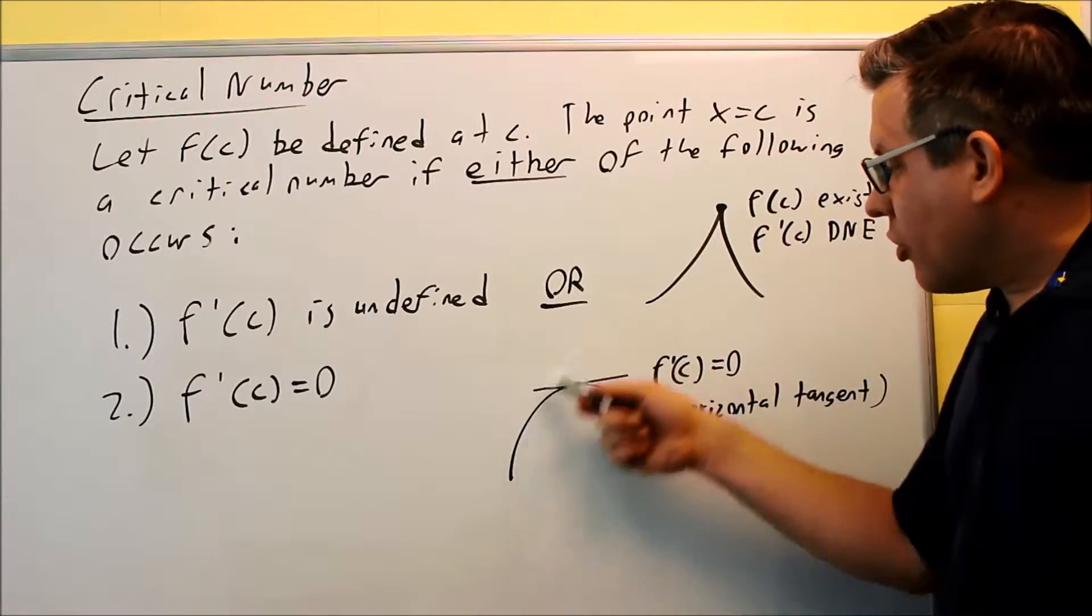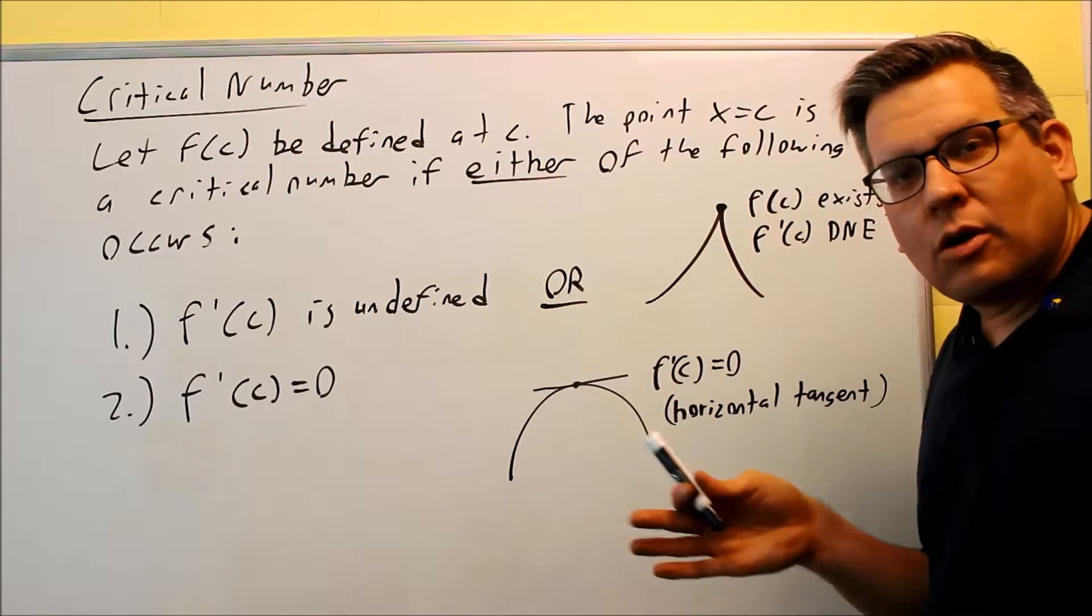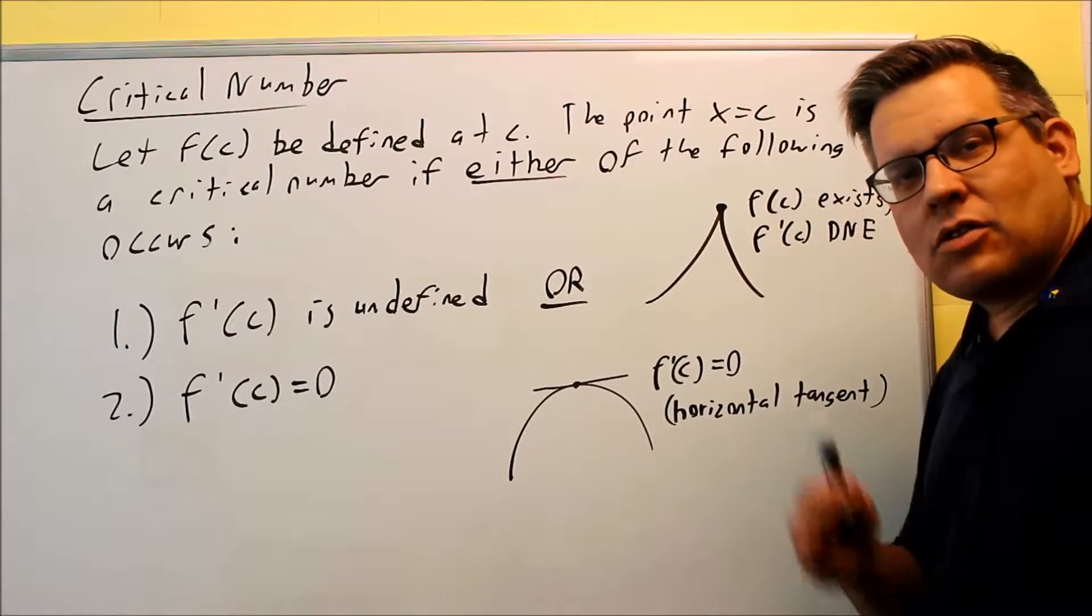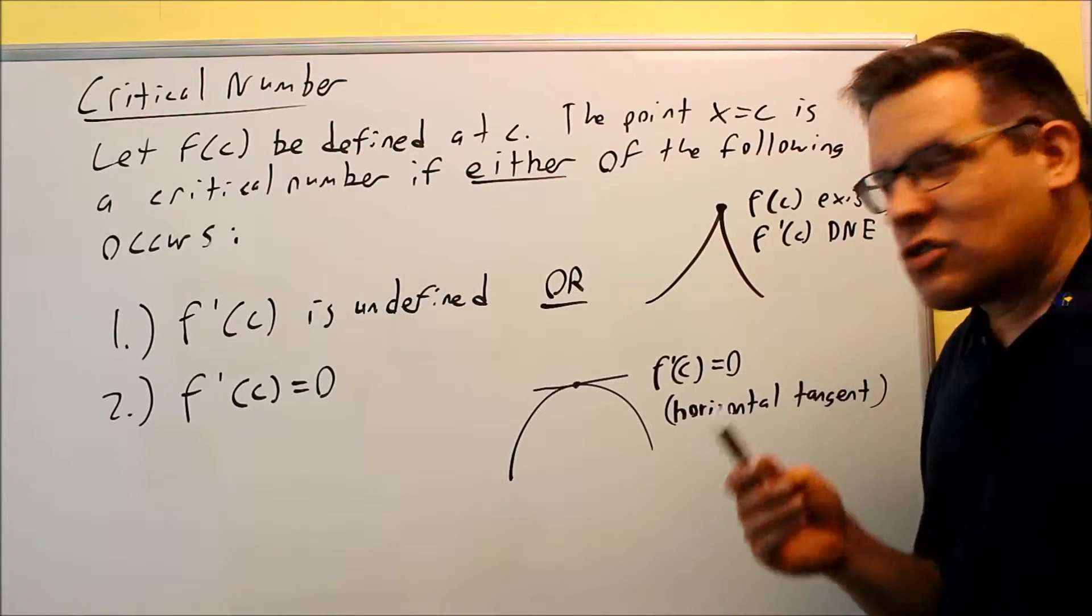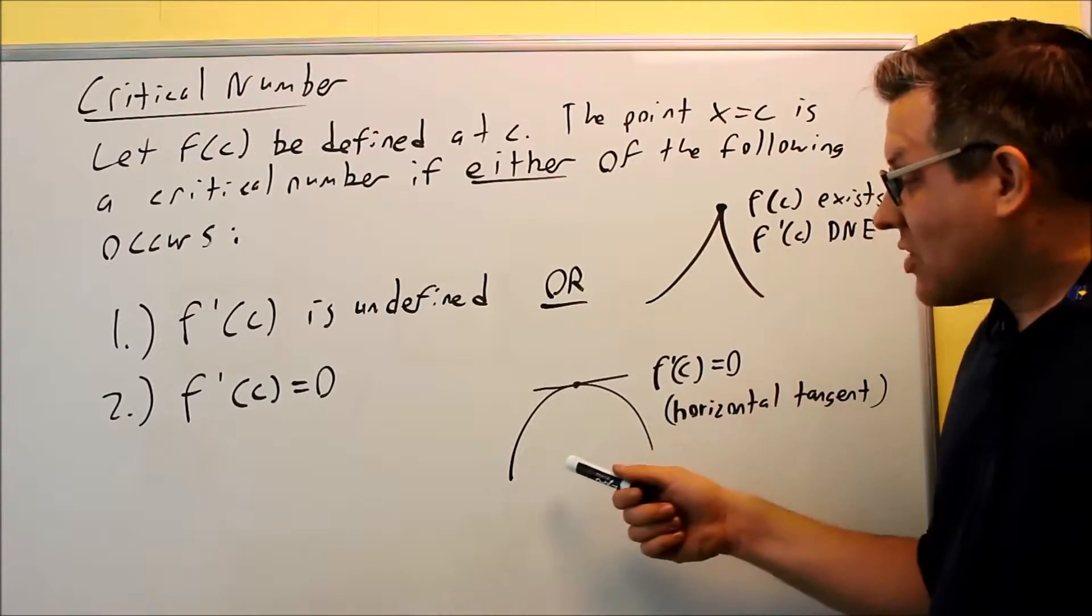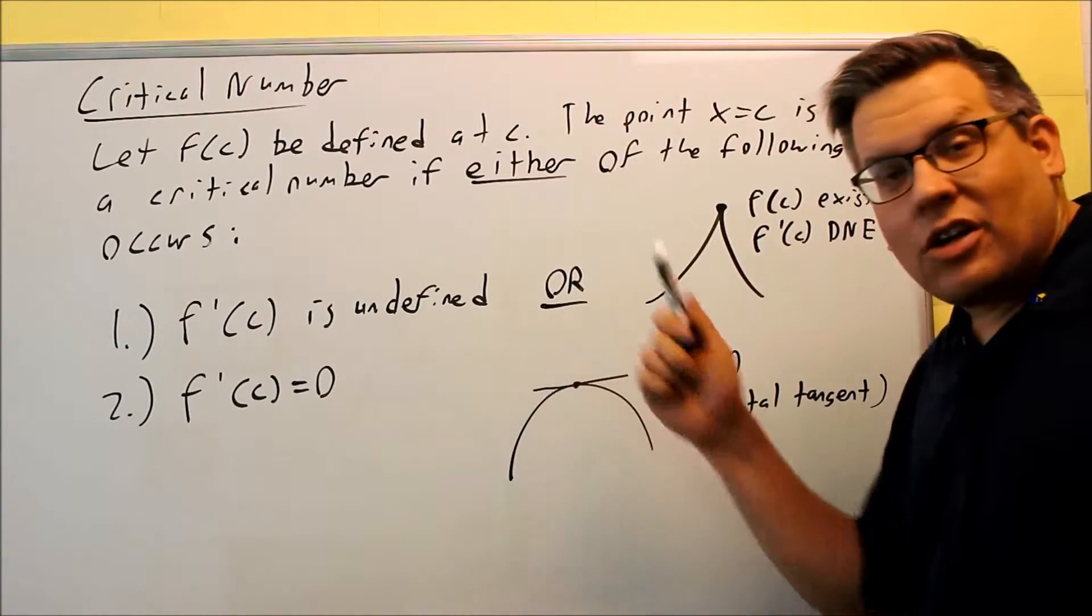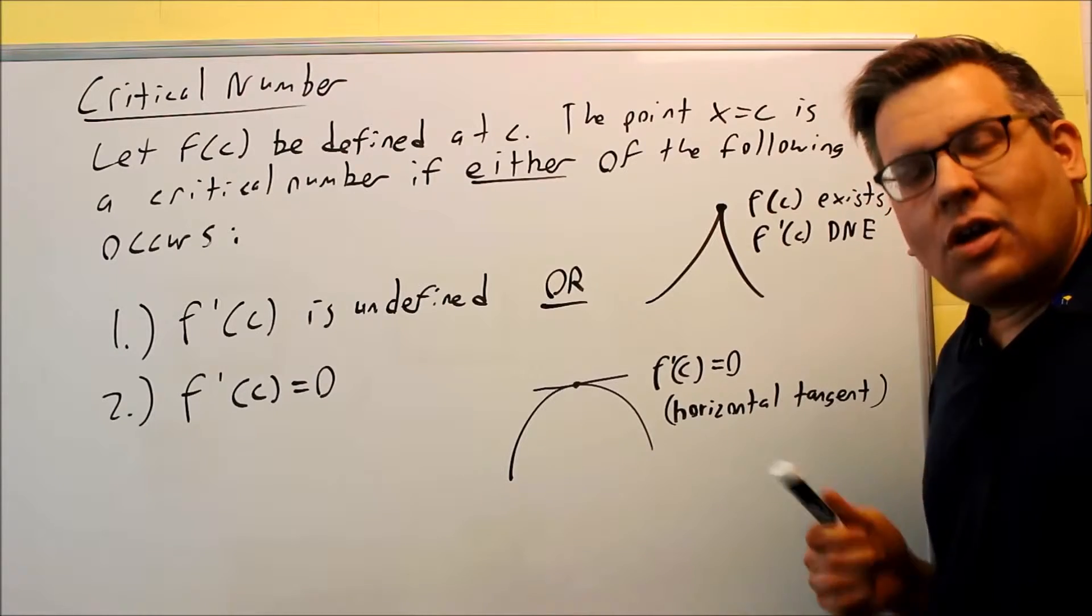You could either have a hill going up like this or you could have a valley. In fact, this idea right here is what we're going to be talking about later in this section when it asks us to find extrema. We can find extrema by taking the derivative, set it equal to zero. That's going to give us either a hill or a valley and it will tell us what's happening around there if I have a local or an absolute max or min there.